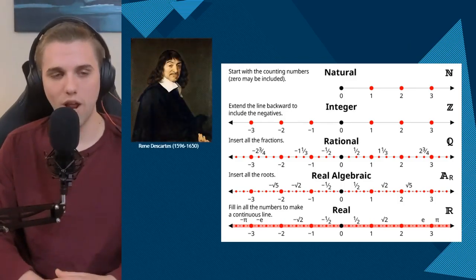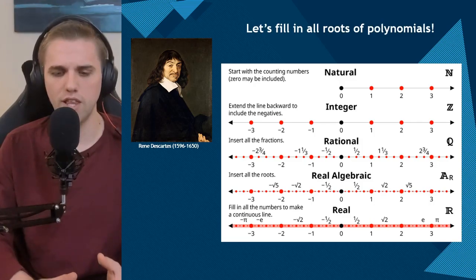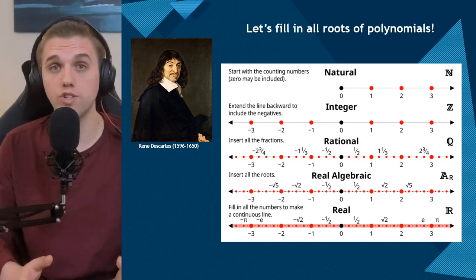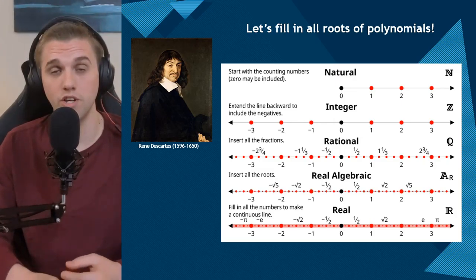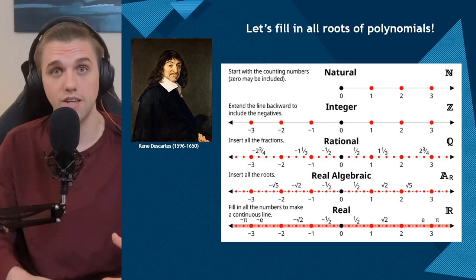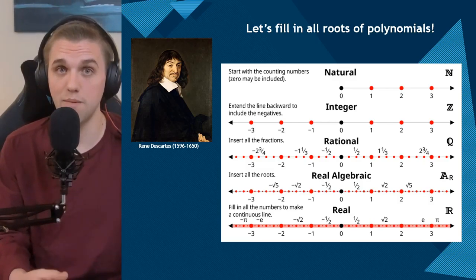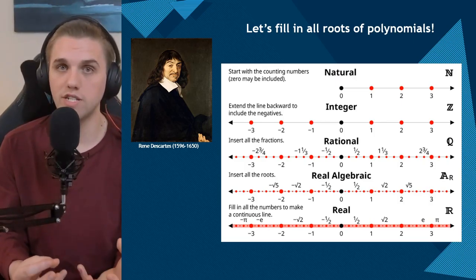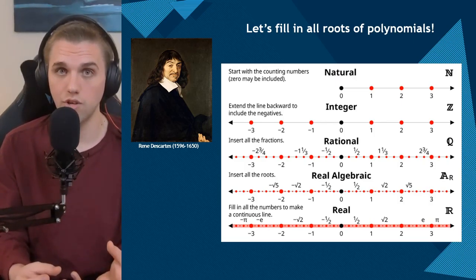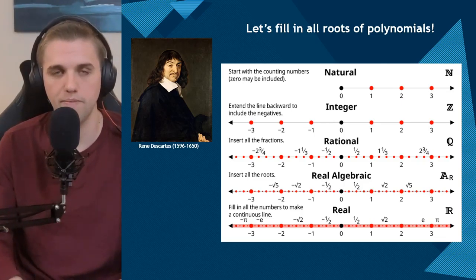Descartes was a great mathematician who asked: can we fill in these holes with roots of polynomials? He was able to interpret the square root of two and the square root of five as separate from the complex numbers, the imaginary numbers. But both of these objects were oftentimes irrational, which was confusing to many mathematicians at the time.